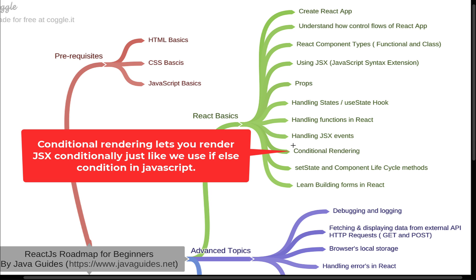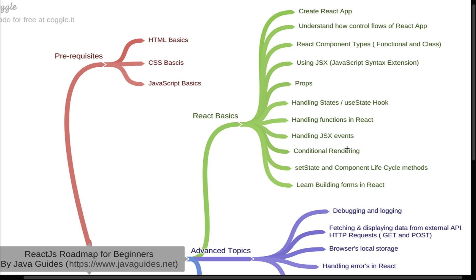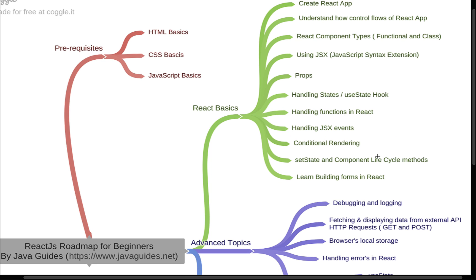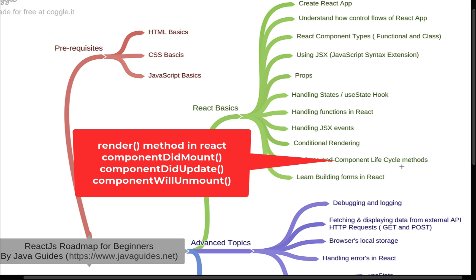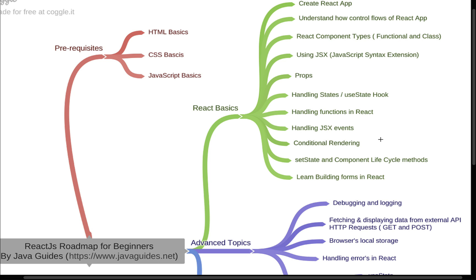Once you understand JSX events, learn conditional rendering. Conditional rendering allows us to render JSX conditionally, just like an if-else statement in JavaScript — you should be able to display UI conditionally and use the ternary operator in React JSX. Next, learn component lifecycle methods, which are very important. Commonly used ones include the render method, componentDidMount, componentDidUpdate, and componentWillUnmount.